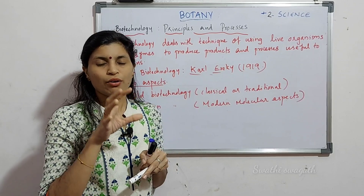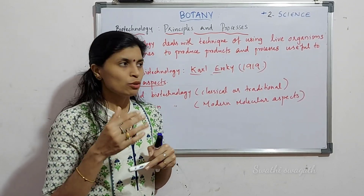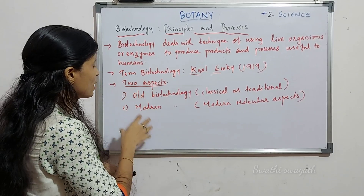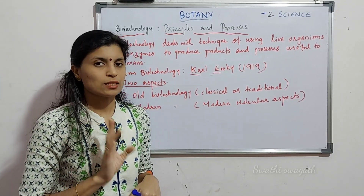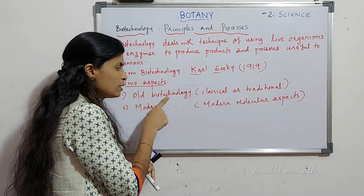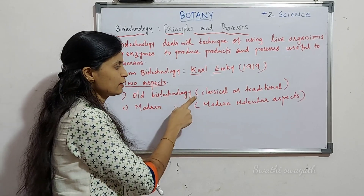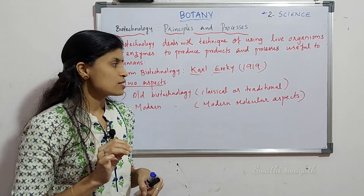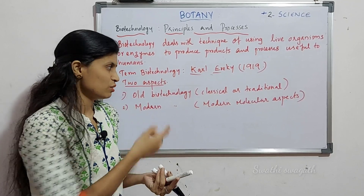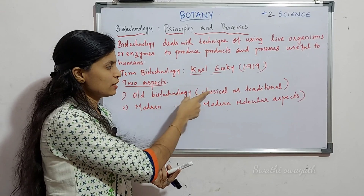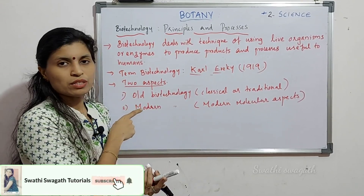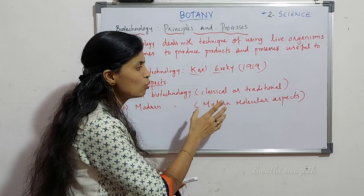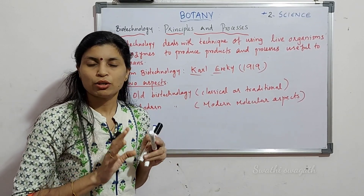Biotechnology has two main aspects. The first is old biotechnology, also called classical or traditional biotechnology. The second is modern biotechnology, also called the modern molecular aspect of biotechnology. These are the two main aspects.